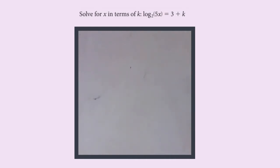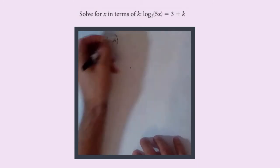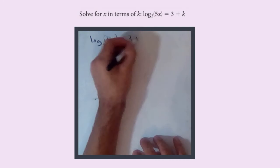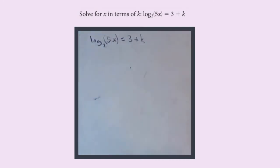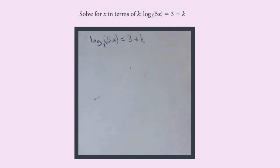Solve for x in terms of k. We have log base 2 of 5x equals 3 plus k. So we have log of something equals a number or a combination of terms, but there's not another log with it—it's a two-term layout on the right.